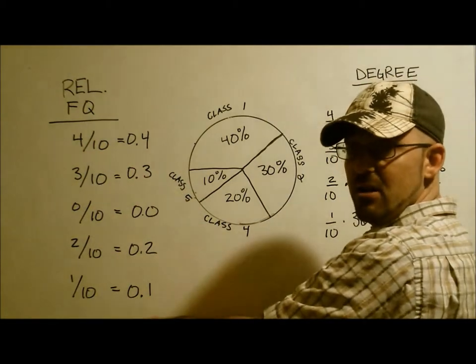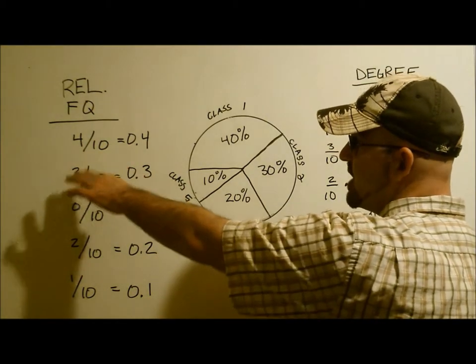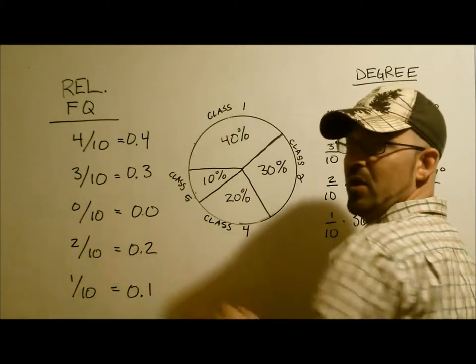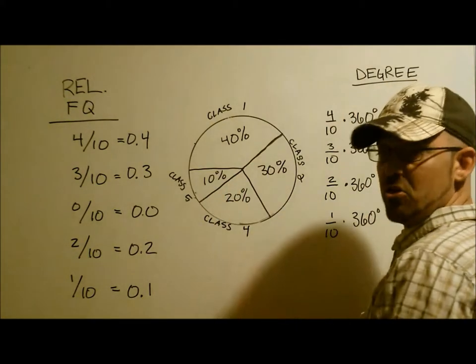With our relative frequency here, we have four tenths, three tenths, no tenths, two tenths, and one tenth. Now all we have to do is create a circle.